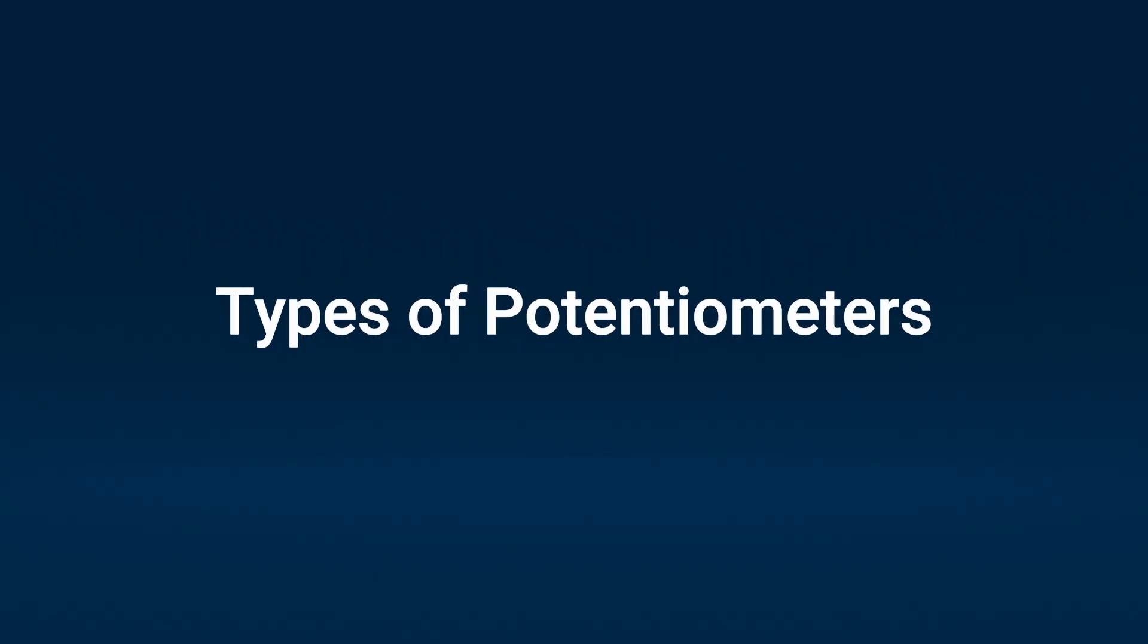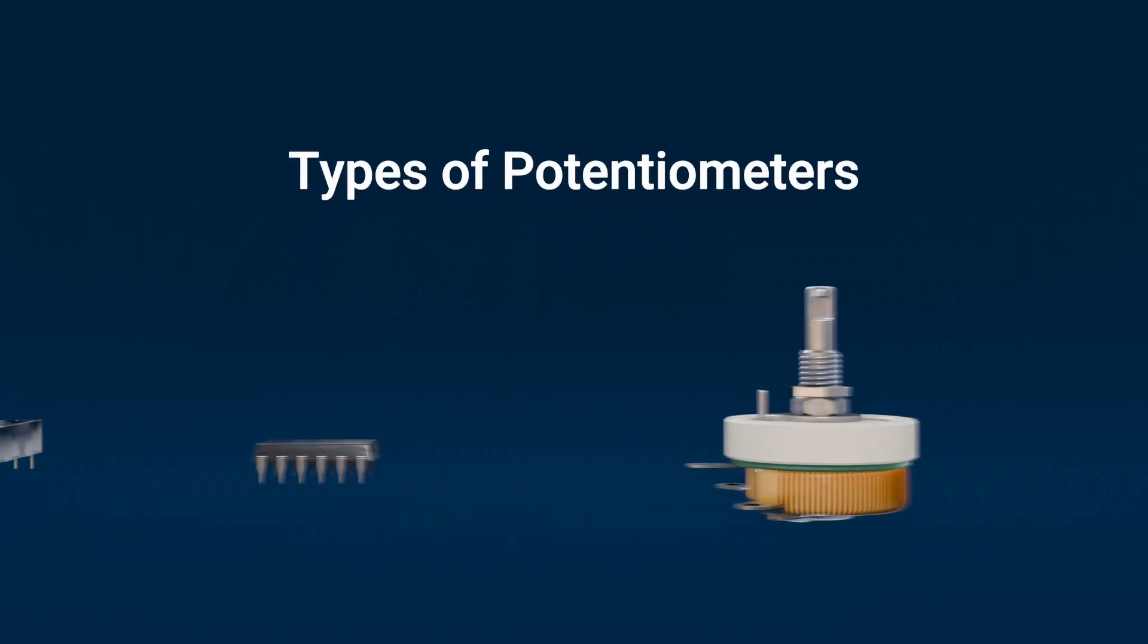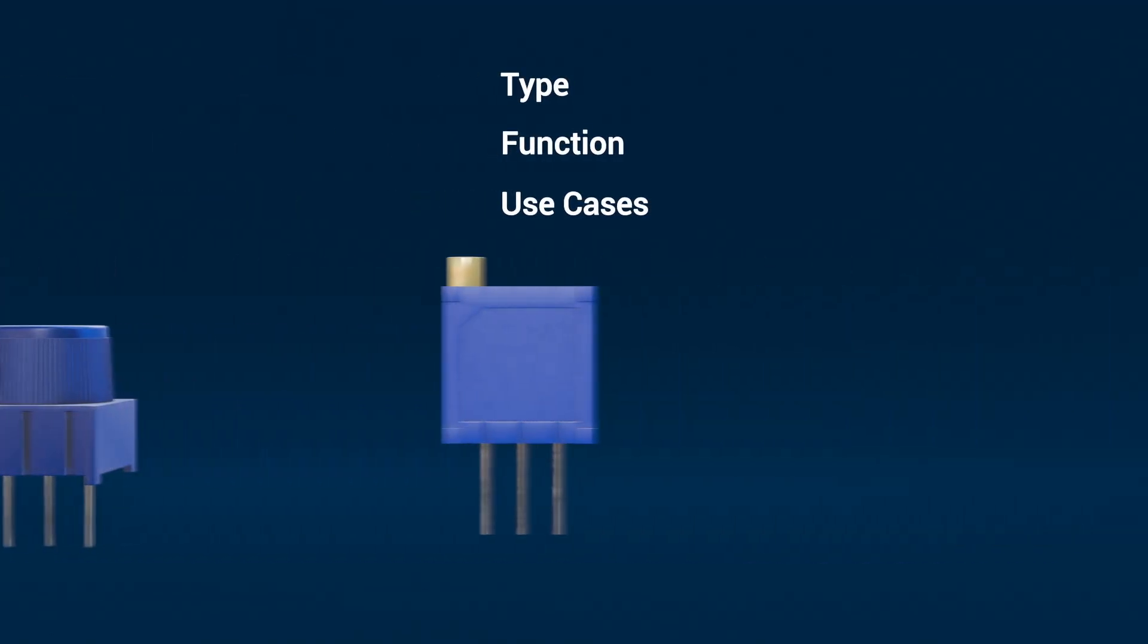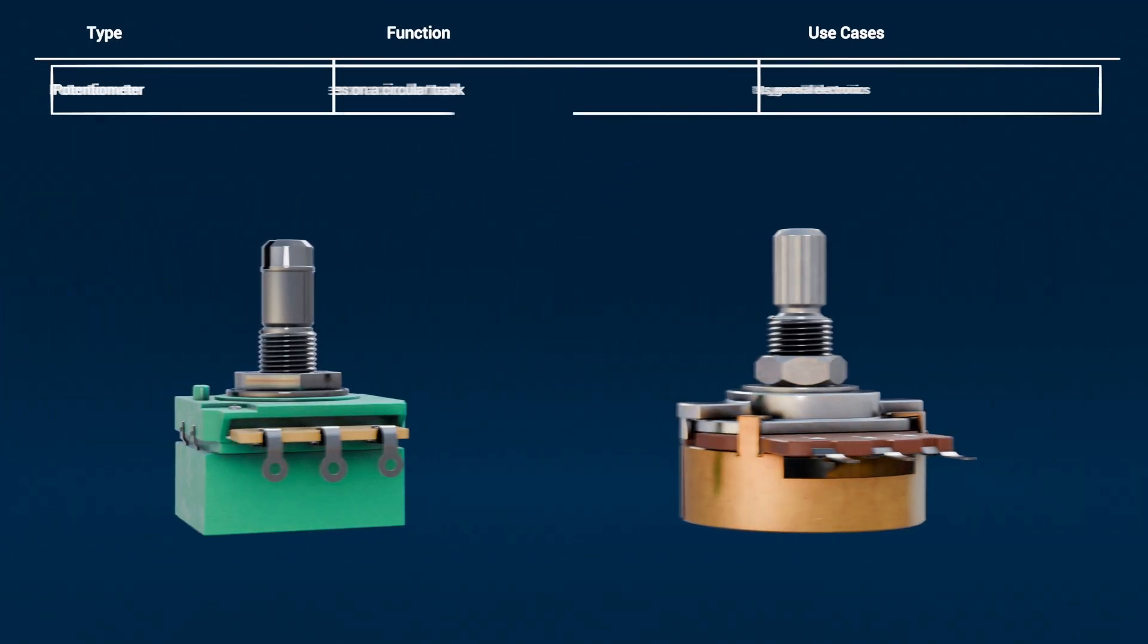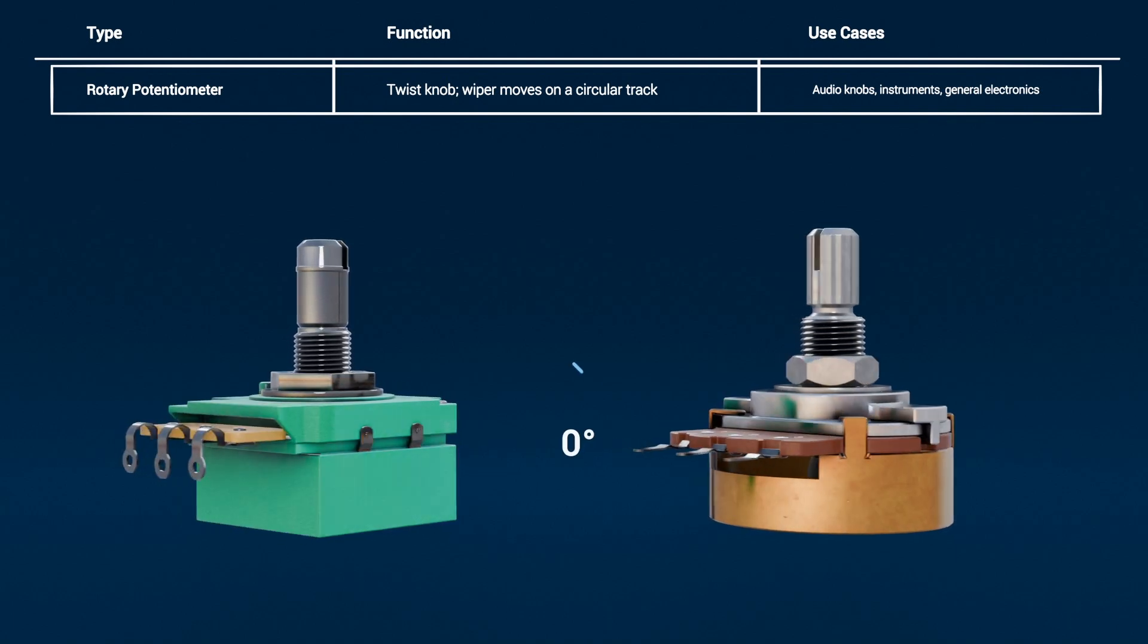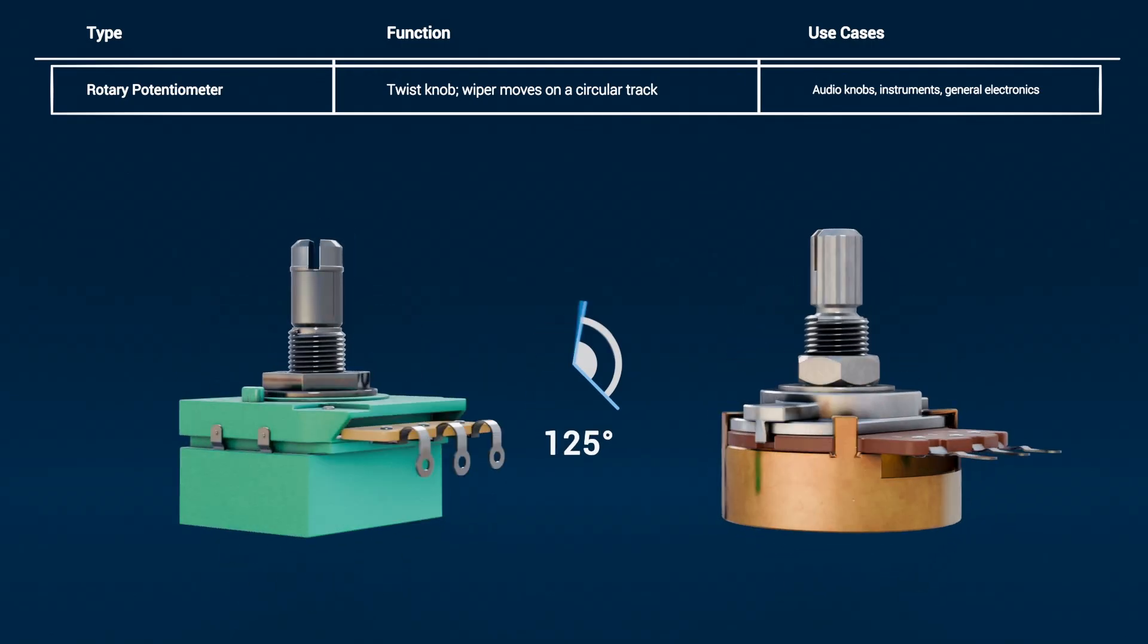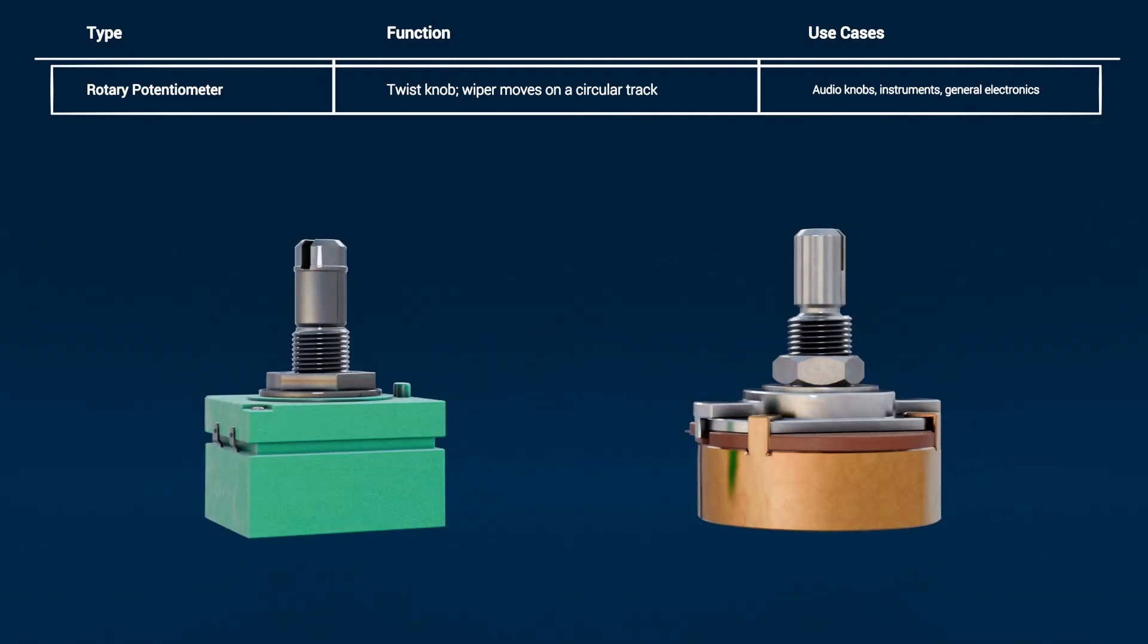Types of potentiometers. Not all potentiometers look or behave the same way. Let's take a closer look at the main types you'll come across. Rotary potentiometer: This is the most common type of potentiometer, the classic knob you twist. The wiper travels along a circular resistive path, usually through around 270 degrees. These are found in audio gear, power supplies, instruments, and general electronics.